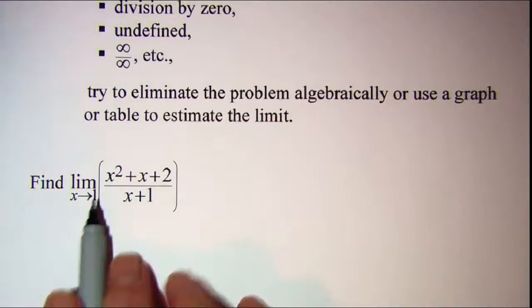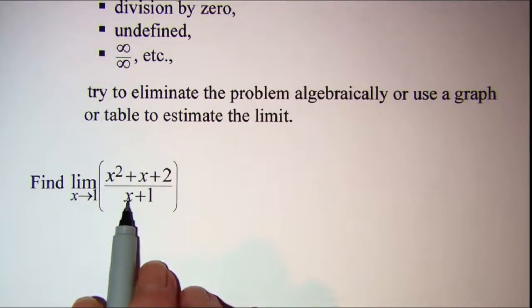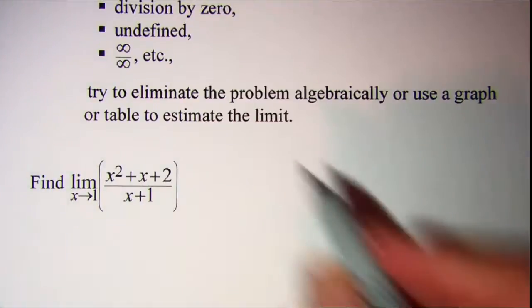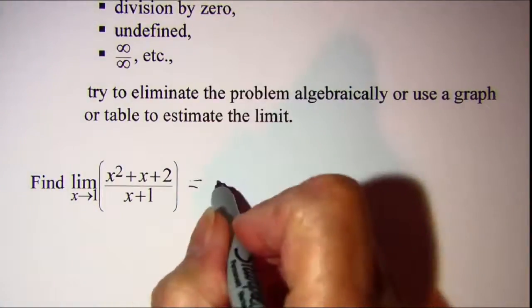And again, since x is approaching 1, if we put 1 in for x we get 2 in the denominator, so there's no problem here. So we can work this with direct substitution.